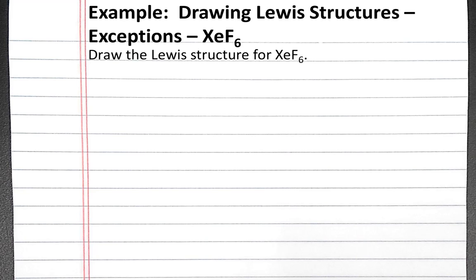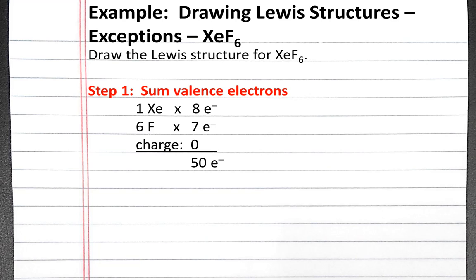In this example problem, we'll draw the Lewis structure for xenon hexafluoride. Our first step is to sum the valence electrons. We have one xenon atom with eight valence electrons. We have six fluorine atoms with seven valence electrons each, and our charge is zero. So we have a total of 50 valence electrons.